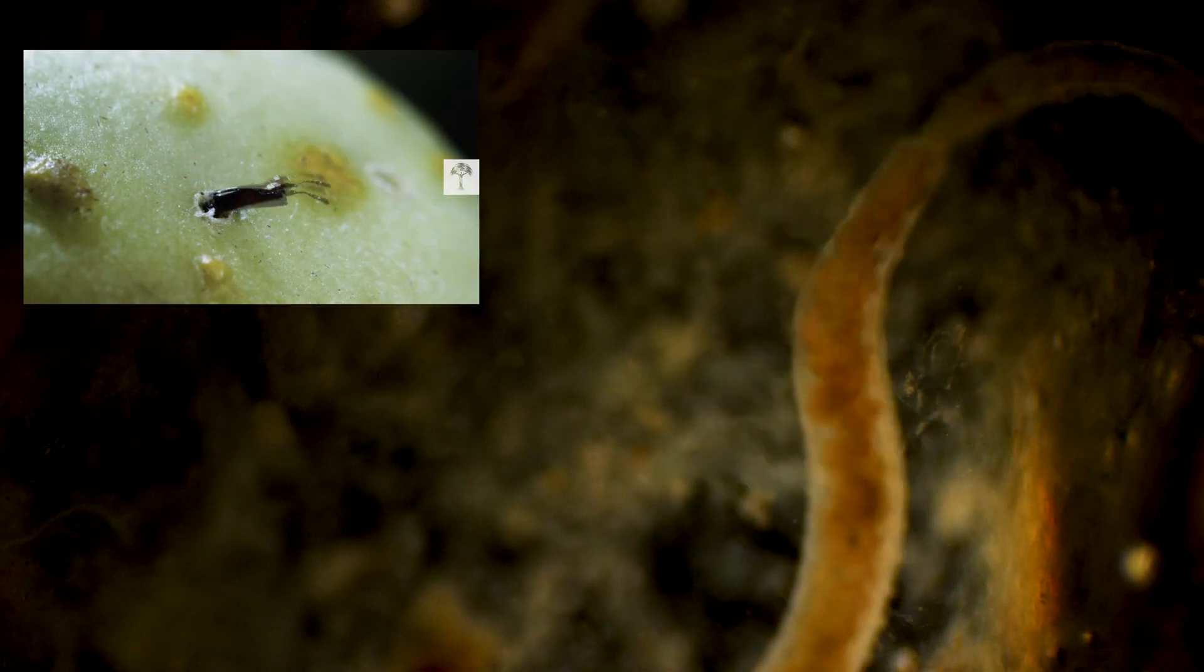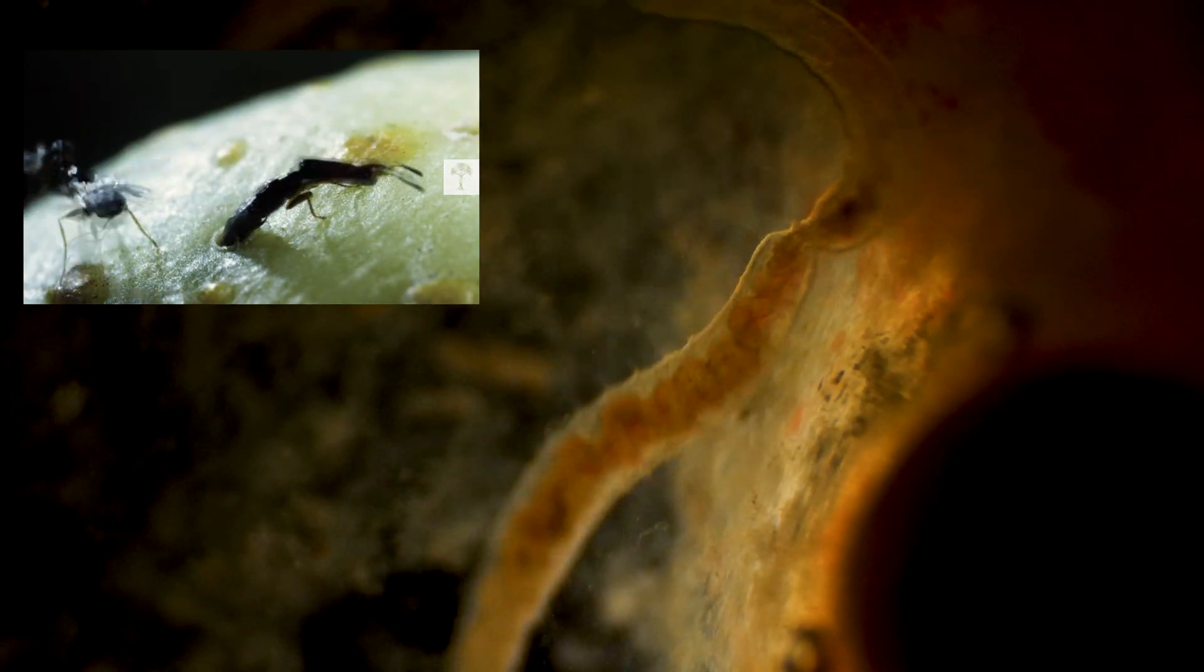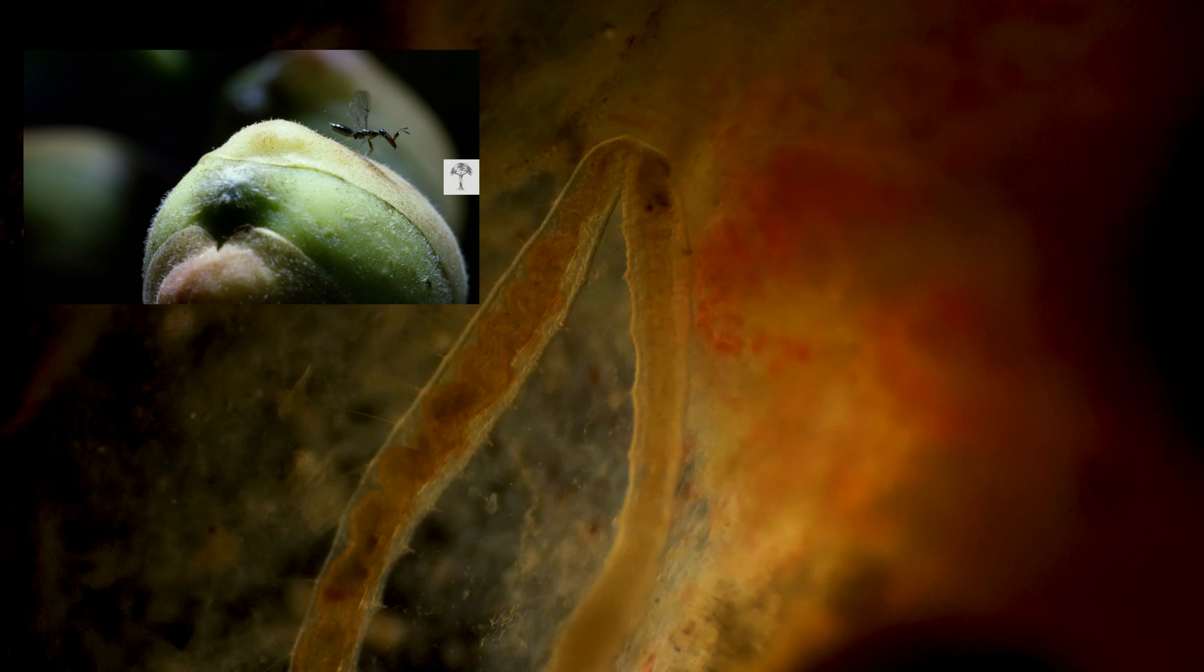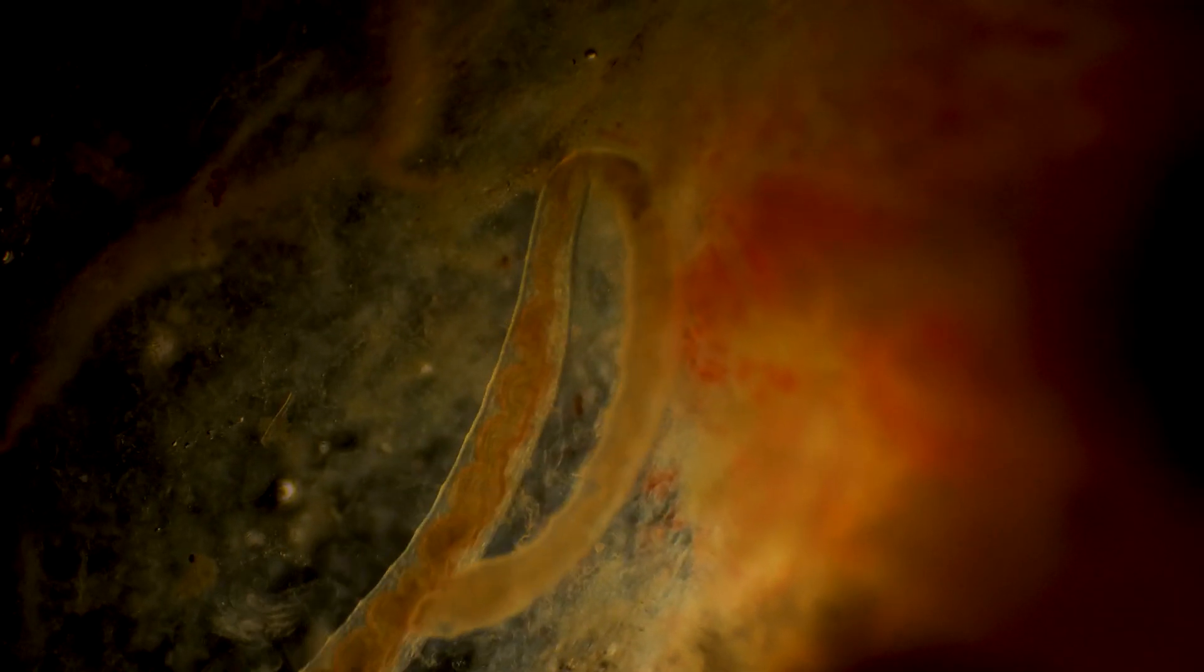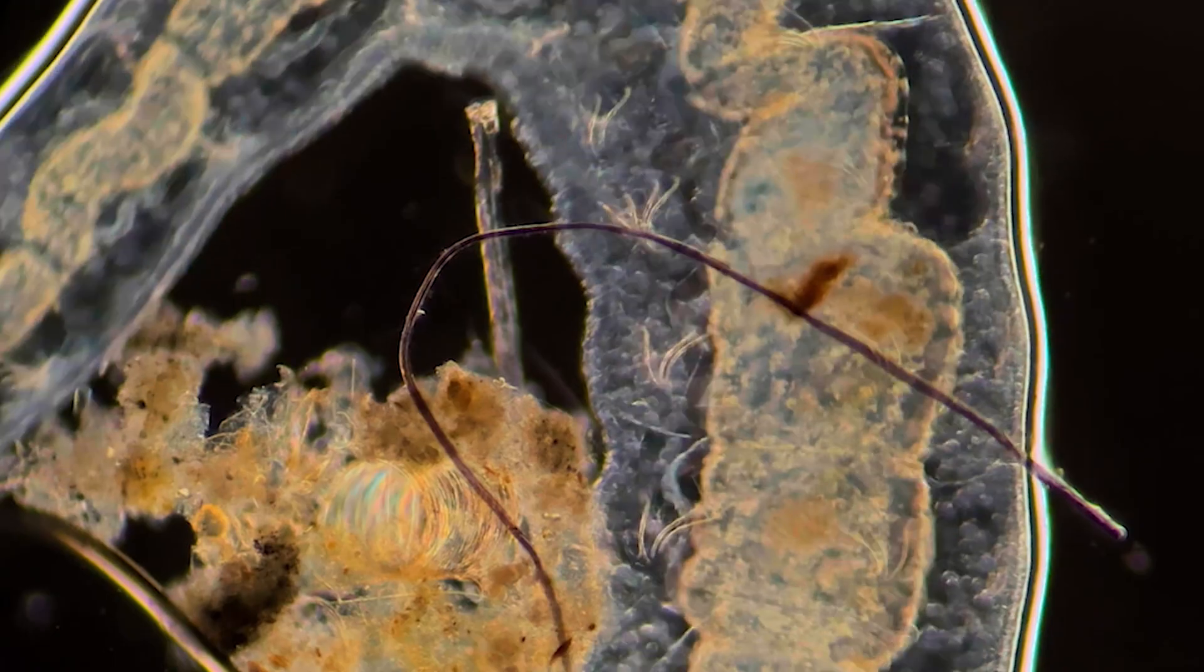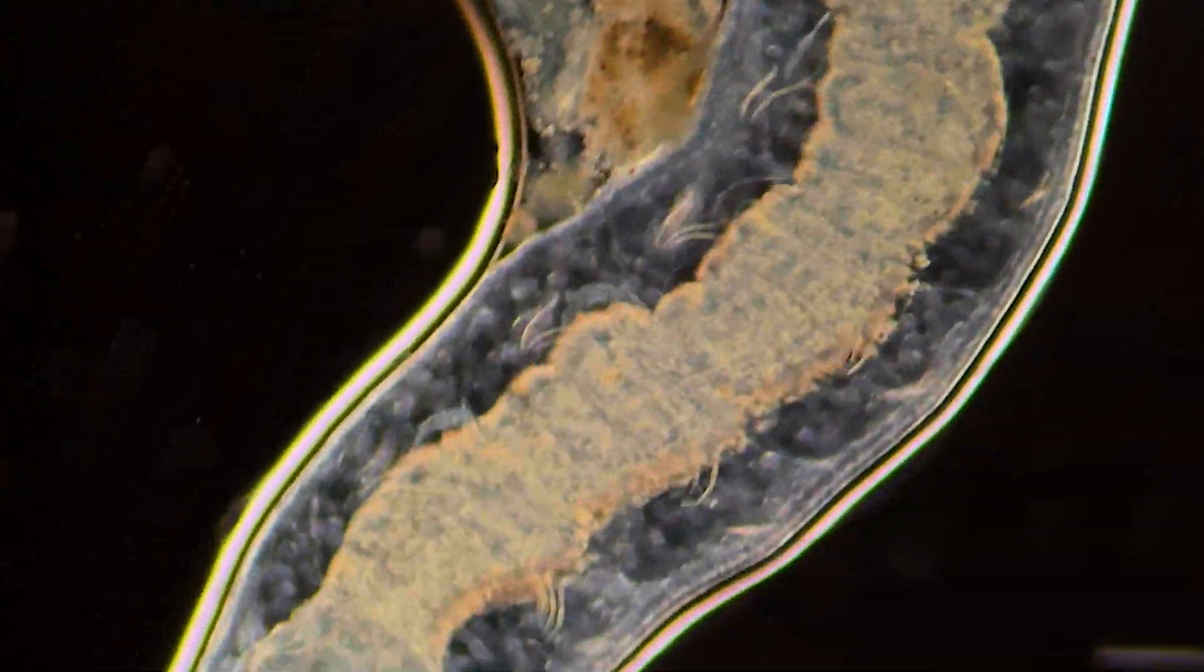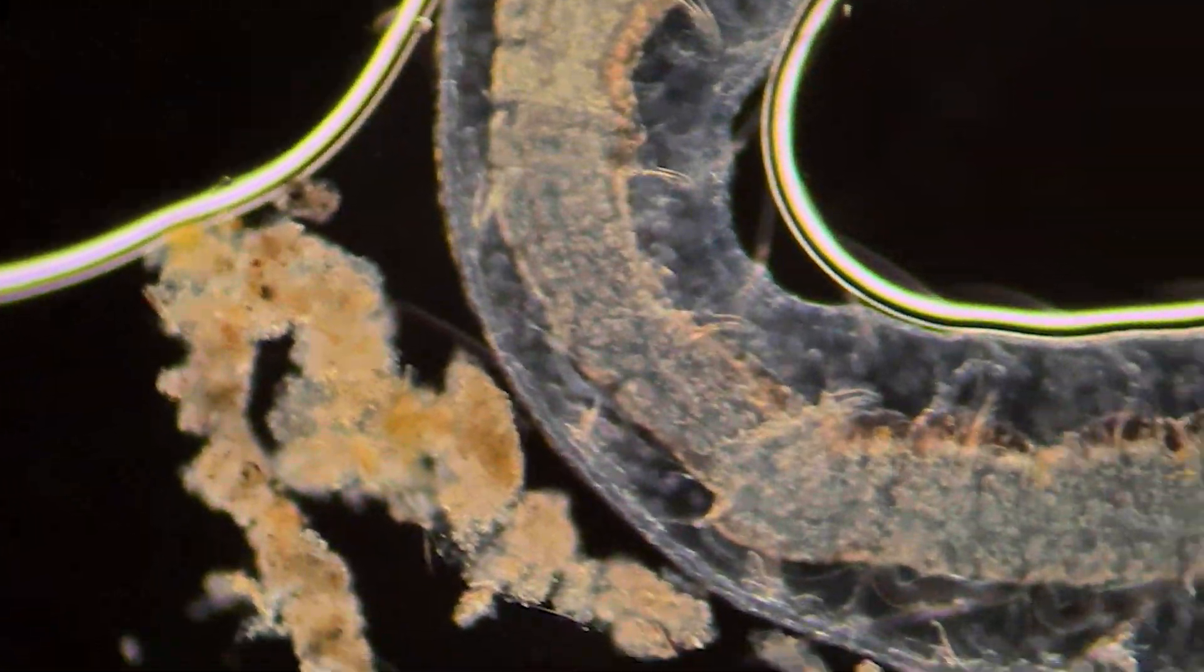The female wasp enters the fruit through a small opening to lay her eggs. Inside the fig, there are special structures called syconia, where the future larvae develop. Once the eggs mature and the larvae hatch, they start feeding on the fig's internal tissues.